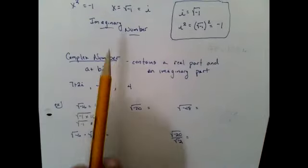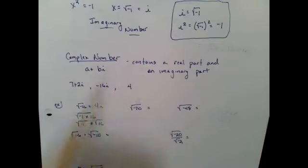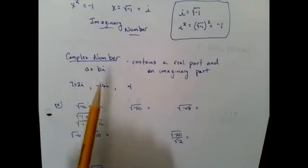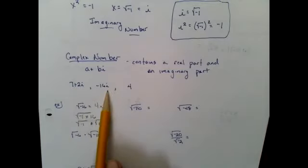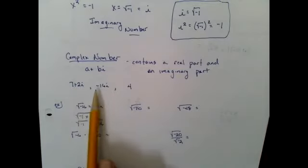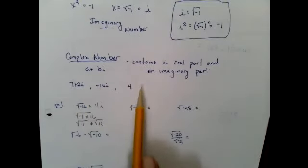Now that we have an imaginary number, we can come up with something called a complex number — a number that has a real part and an imaginary part. For example, 7 + 2i, negative 16i (which is 0 + negative 16i), and 4 (which is 4 + 0i). All numbers can be written as complex numbers.